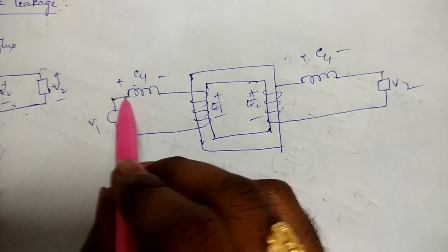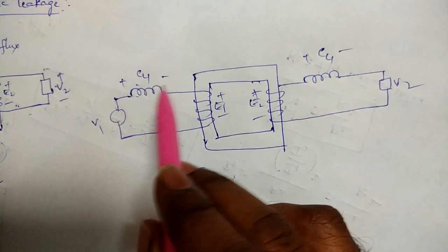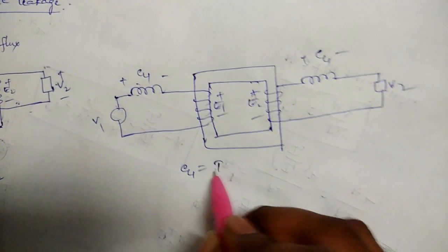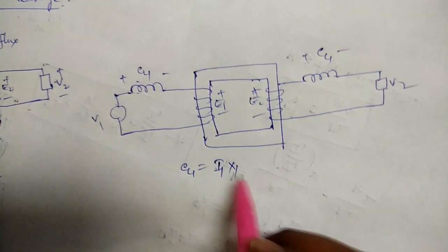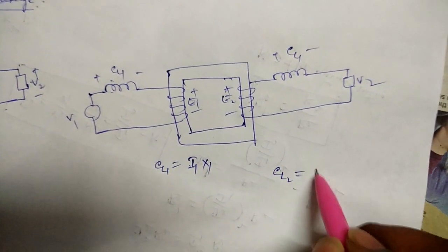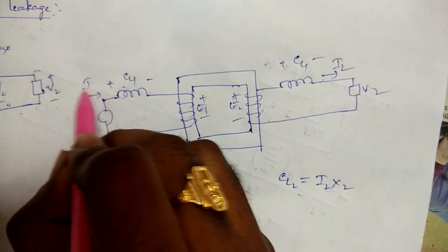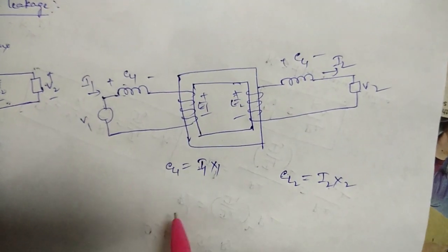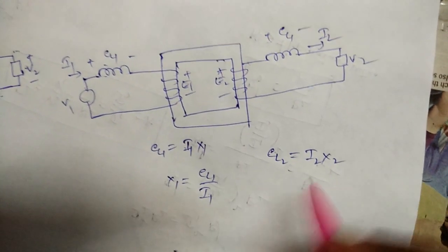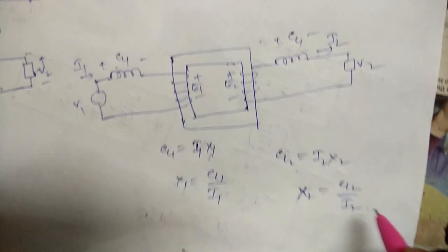If we represent leakage as an inductance, it has some reactance. El1 = I1 · X1, and El2 = I2 · X2, where I1 is the primary current and I2 is the secondary current. Therefore X1 = El1 / I1 and X2 = El2 / I2.